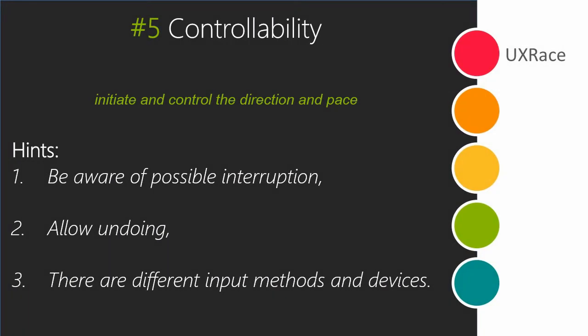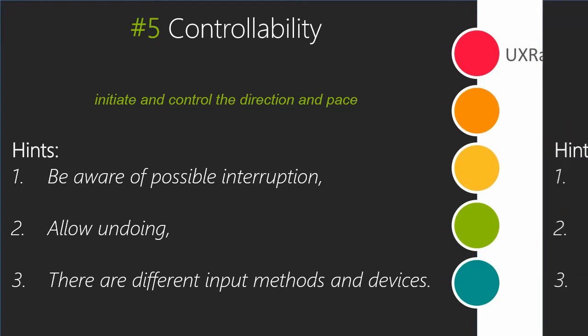The next principle is controllability. The user should be able to initiate and control the direction and pace of the interaction until the goal has been achieved. If the dialog has been interrupted, the user should be able to determine the point of restart. The user should be able to undo at least the last step, and should be able to use any available input or output device where appropriate.